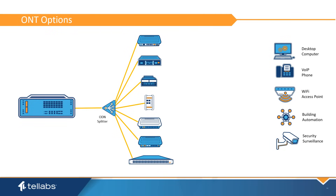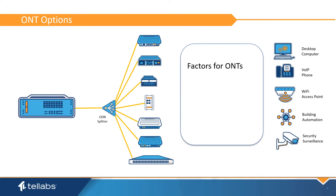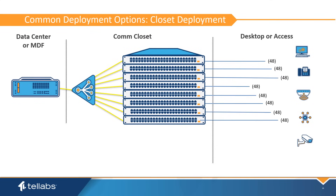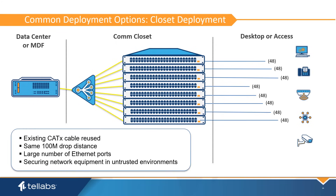One of the unique features of optical LAN is the flexible deployment of the ONT. ONTs have been designed for a variety of installation options. Factors that may determine what type of ONT to use include service type, building codes, security, economy, density, and location. ONTs are not network switches and do not need to be secured in the network; however, it may be advantageous to deploy them as you would an access switch. By placing the ONT in the equipment room, existing CAT-X cable can be reused, a higher density of ports can be installed where needed, and network components can be secured in untrusted environments.